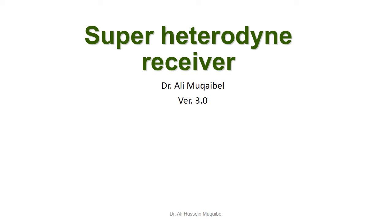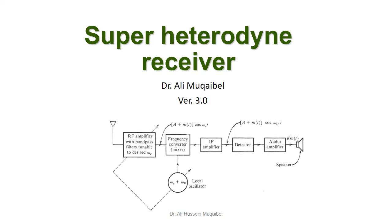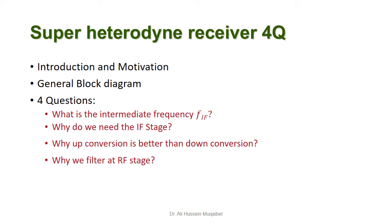Today's lecture is about the superheterodyne receiver. We will start with the introduction and motivation, then go on to the general block diagram. The lecture is divided into four questions: What is the intermediate frequency? Why do we need it? Why is up-conversion better than down-conversion? And why do we filter at the radio frequency stage?